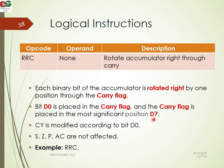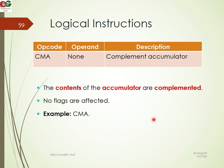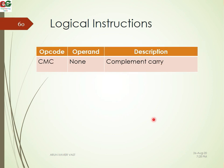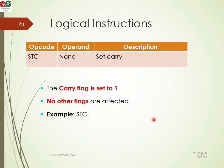RRC is rotate accumulator right. Next is CMA — complement accumulator. The content of the accumulator is complemented: each 0 becomes 1 and each 1 becomes 0. CMC is complement carry — it complements the carry flag. If the carry flag was set (1), it becomes 0, and no other flags are affected.